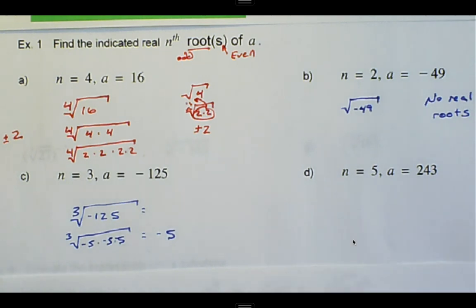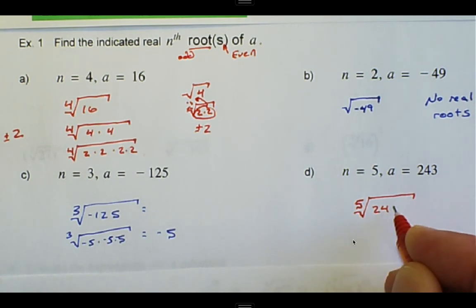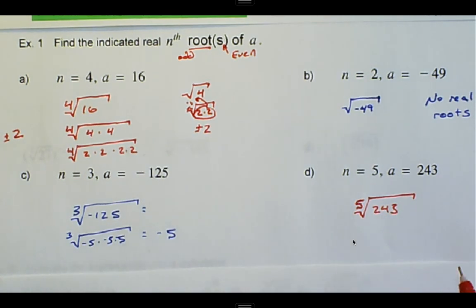And then we have the fifth root of 243, and the fifth root of 243 is 3.